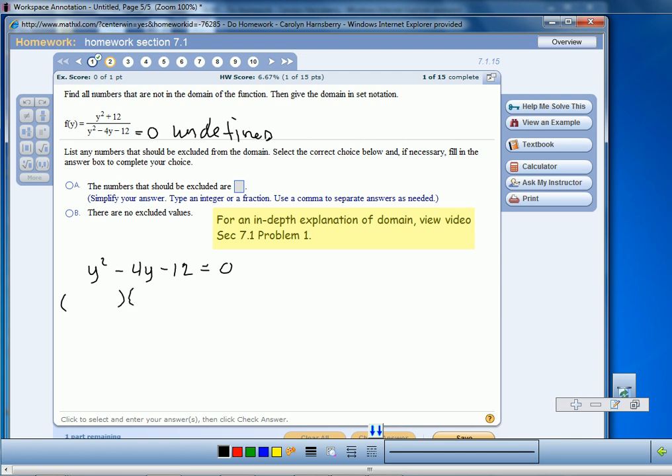After using product and sum or trial and error, whichever method you want to use, you'll find that the factorization is Y minus 6 times Y plus 2.